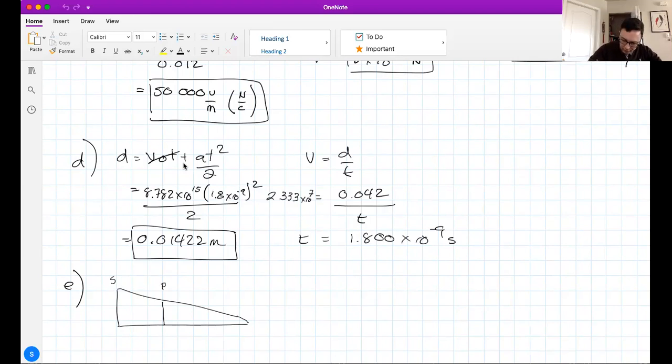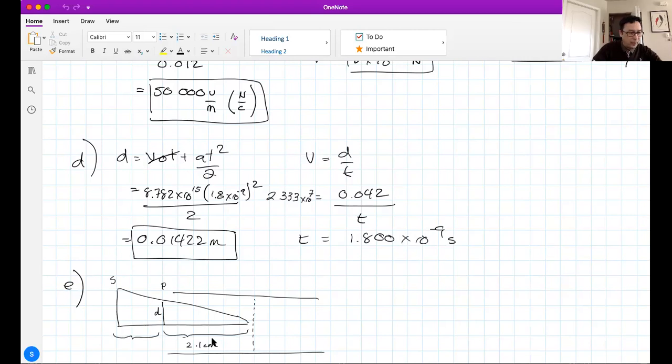This deflection here, little d, I've already calculated: 0.01422. And these distances here are known. Look at the diagram. The plate length here... Plates run essentially here and here. This is obviously not to scale. It's always half the plate length that gives you this distance here. Half the plate length. So since the plates are 4.2 centimeters, this has got to be 2.1 centimeters.